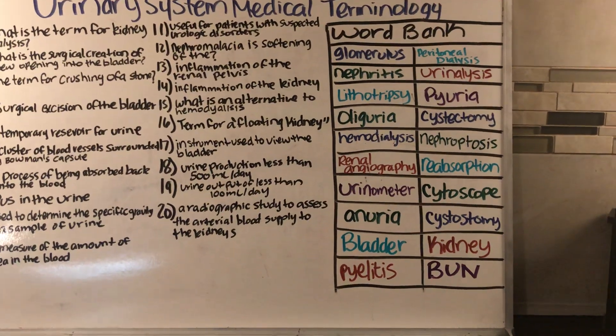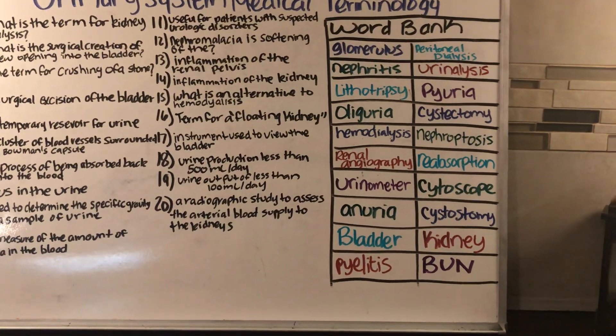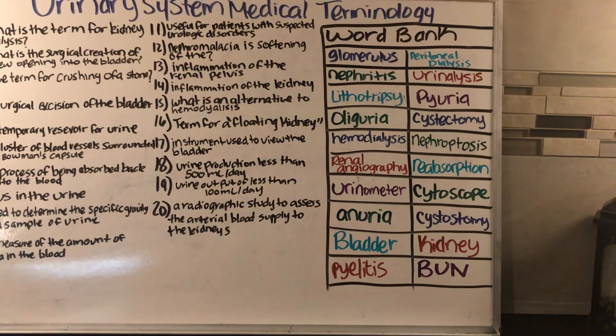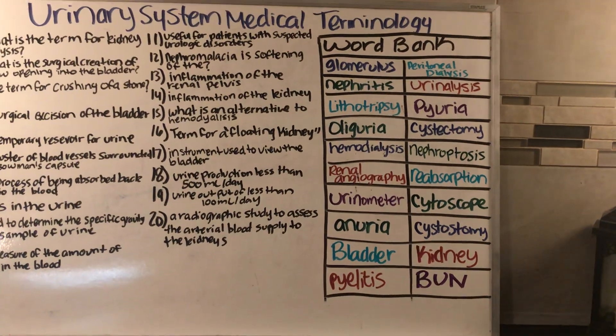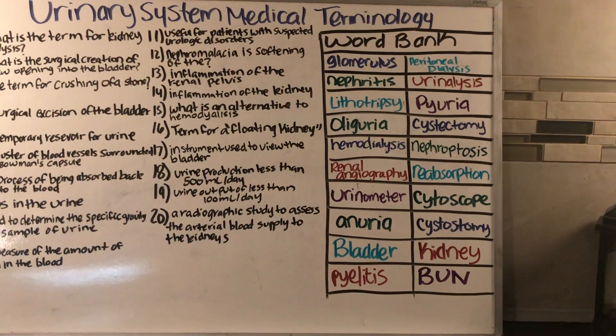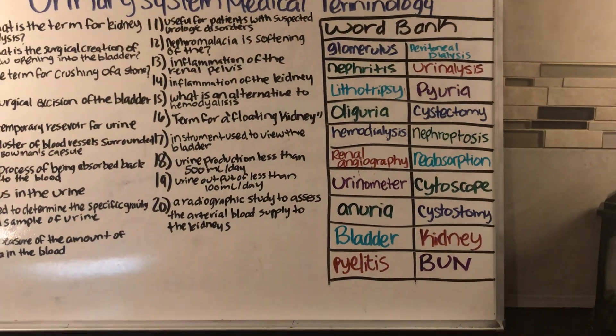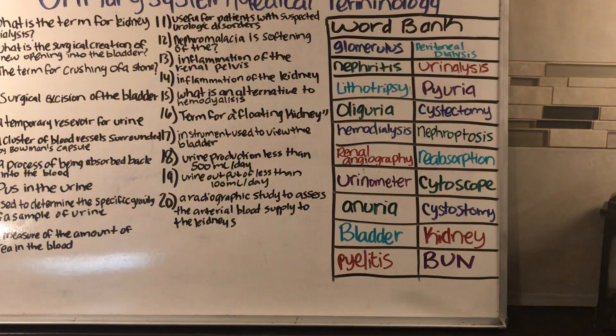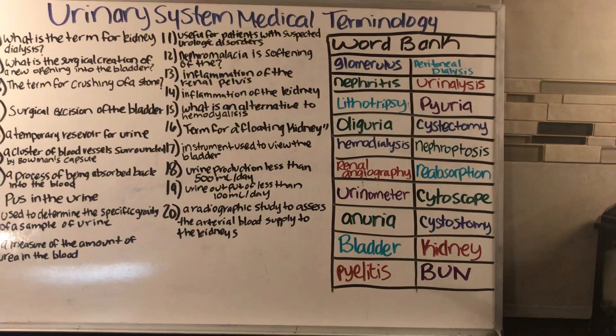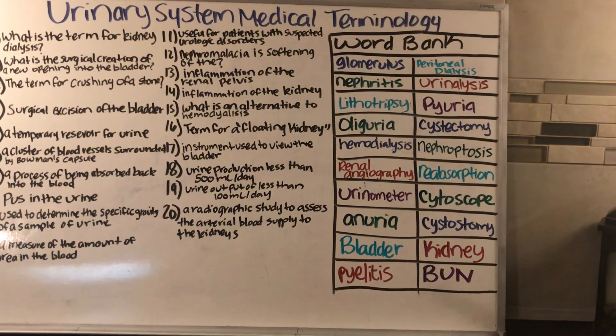Number twelve: nephromalacia is softening of the what? The kidney.